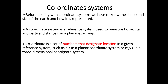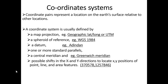Before dealing with coordinate systems, we have to know the shape and structure and how it is represented. The coordinate system is a reference system. A datum is also a reference system for a particular location — measuring horizontal and vertical positions, that is latitude and longitude. The coordinate of a point is a defined location in a given reference system, such as XY in a planar coordinate system or XYZ in a three-dimensional coordinate system.